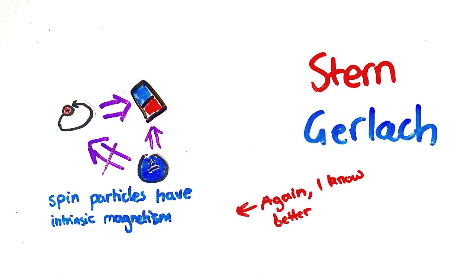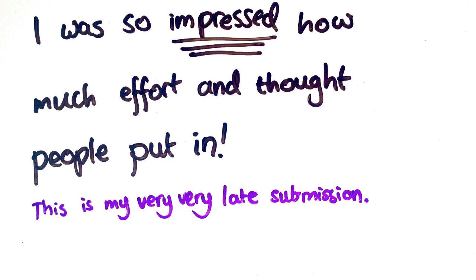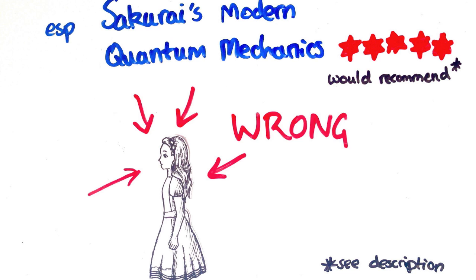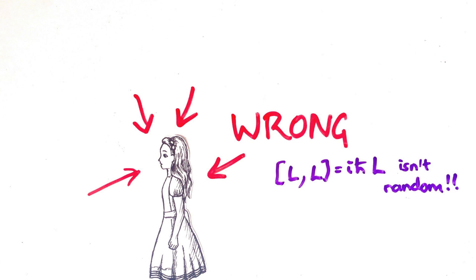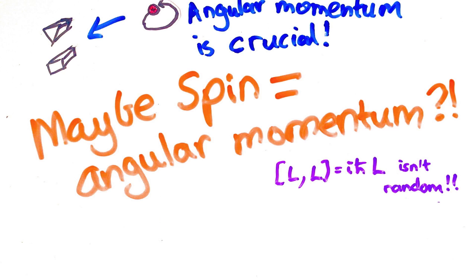In the last video I asked you to research spin for me, which you did a brilliant job of. I did the homework too by reading a bunch of things, and I realised that I was wrong about both these arguments. There is a very good reason that suggests this equation defines angular momentum — I'll explain why in the next couple of videos. But today I'll talk about why I was wrong about the Stern-Gerlach experiment. The angular momentum isn't just a useless byproduct; it's actually pretty crucial. And so maybe spin is angular momentum.